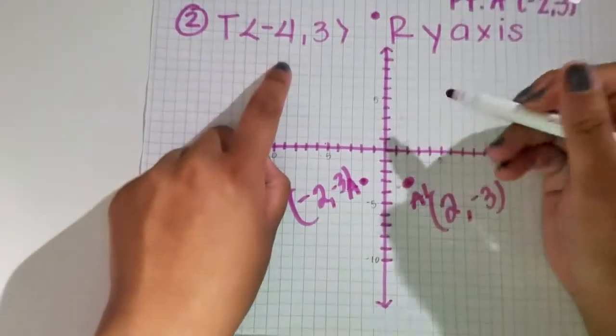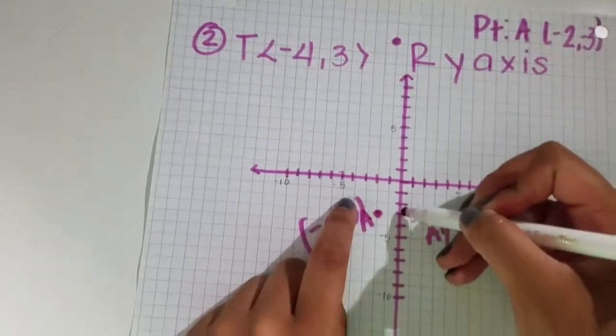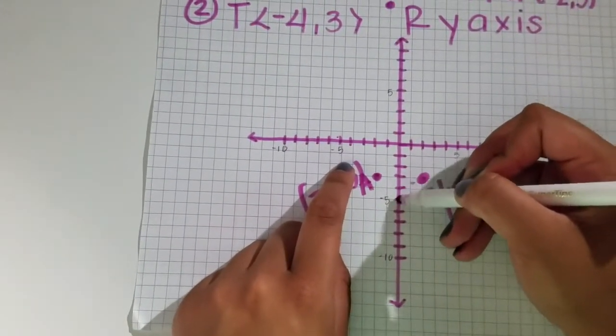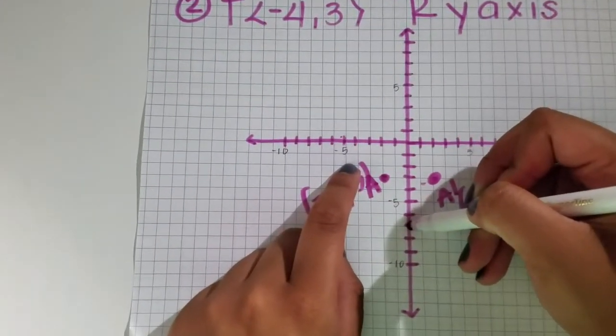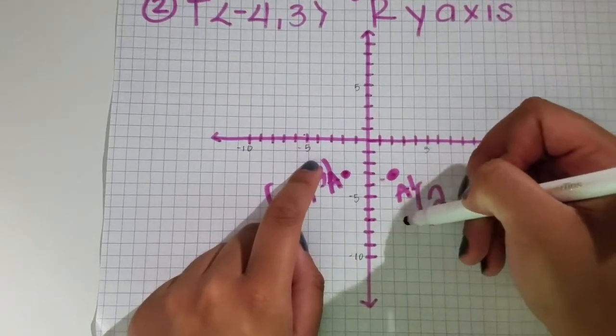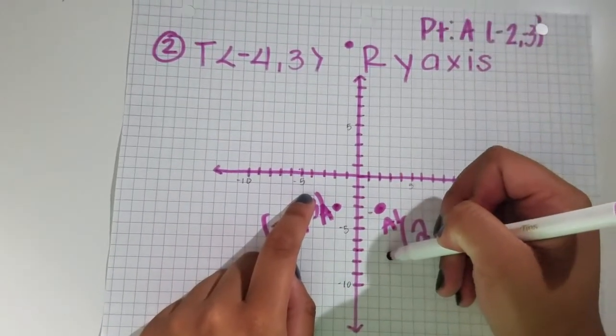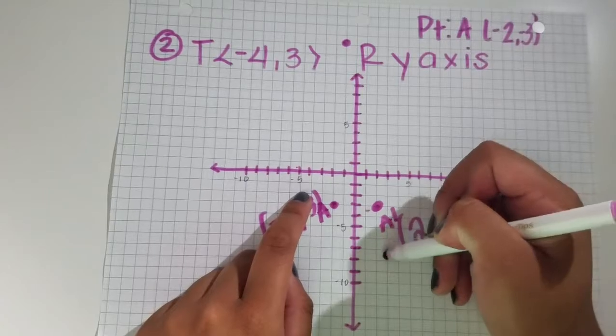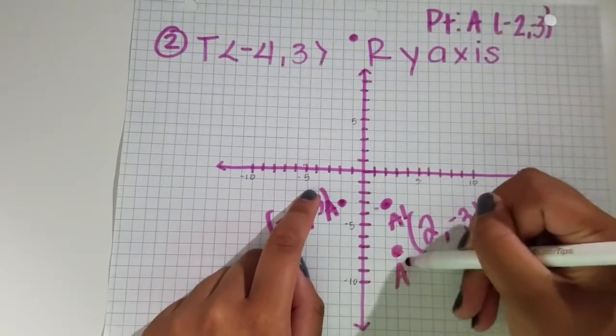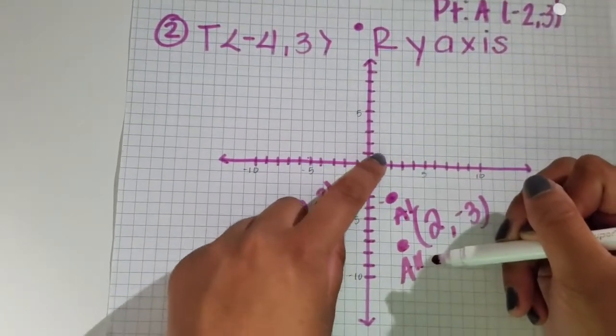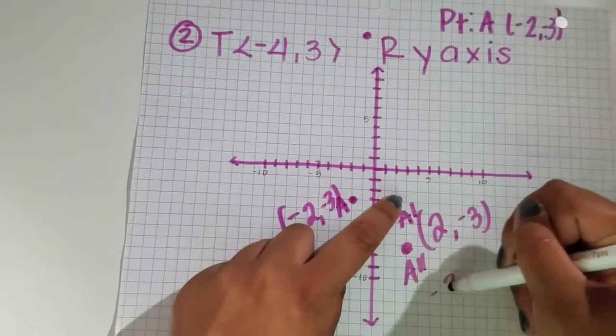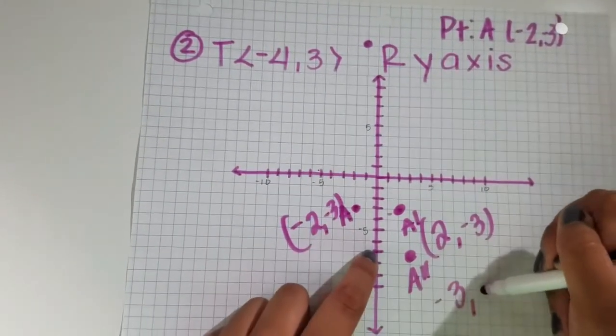And then you want to go down 4. So 1, 2, 3, 4, and over 3: 1, 2, 3. And it's right here. That's A double prime, which is (-3,-7).